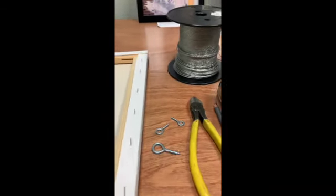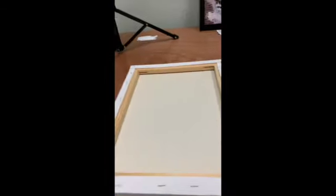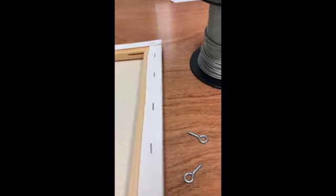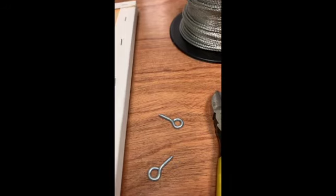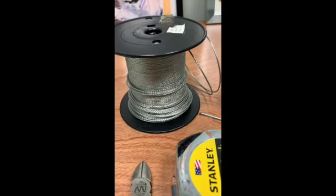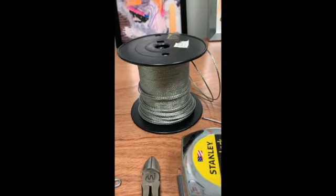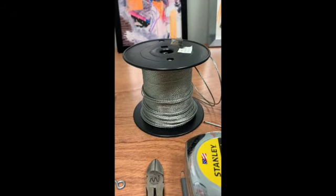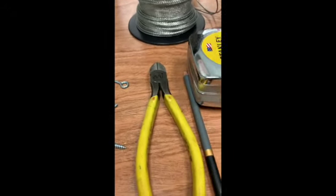If you have something light like this canvas that I'm using, which is very small and light, you only need the smaller screw eyes. You'll need some wiring—I don't think you'll need this much wire but I keep this handy because it lasts forever—and then a wire cutter to cut the wire to size.